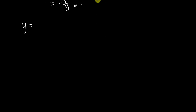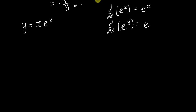Now let's try a more complicated example: y = x·e^y. First, note that if you differentiate e^x you get back e^x, so if you differentiate e^y you get e^y but you add dy/dx at the back. You also notice that the right-hand side is x multiplied by e^y, so this is a product rule. Product rule: copy u, differentiate v, plus copy v, differentiate u.